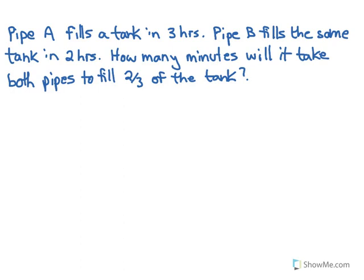So pipe A fills a tank in three hours, pipe B fills the same tank in two hours. How many minutes will it take both pipes to fill two-thirds of the tank? In other words, they're saying you can use one pipe alone and it'll fill this particular tank in three hours. A different pipe will fill it in two hours, but now we want to basically turn both pipes on at the same time and fill this tank together. But we want to see how long it'll take to get two-thirds of that tank full.